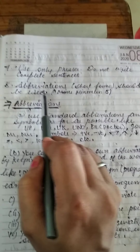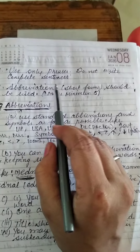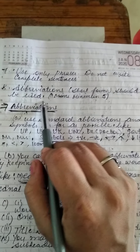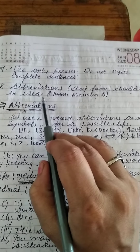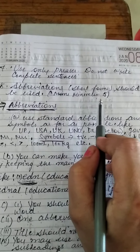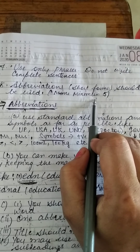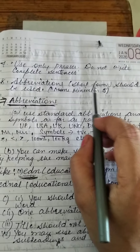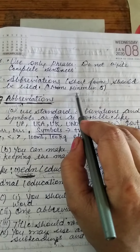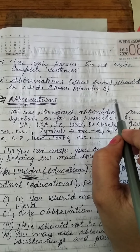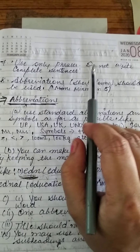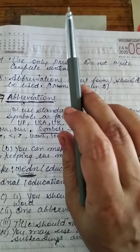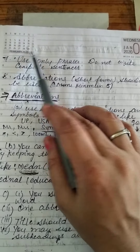This is very important: abbreviations — the short form of long words. Minimum five abbreviations should be used. You have to mention them separately, and you have to use abbreviations in your subpoints, subheadings, and points.